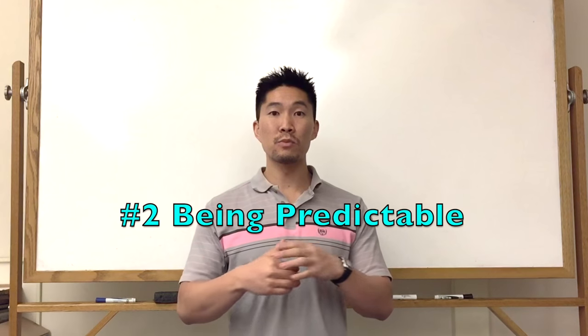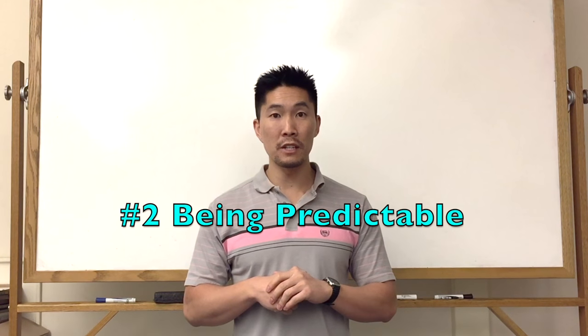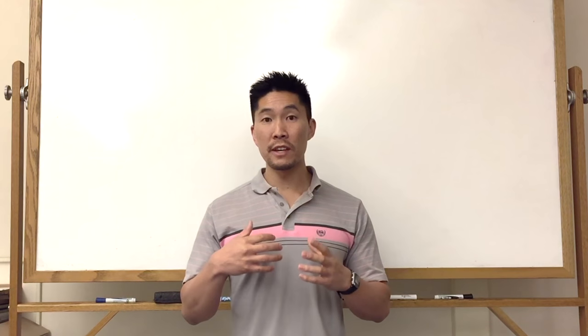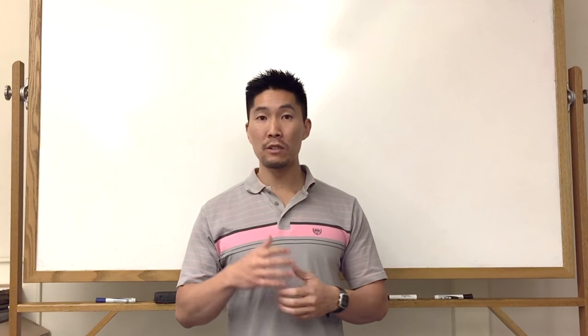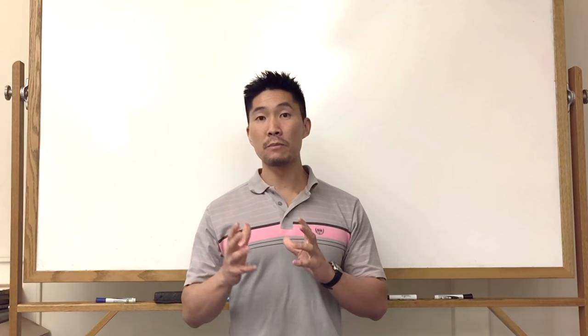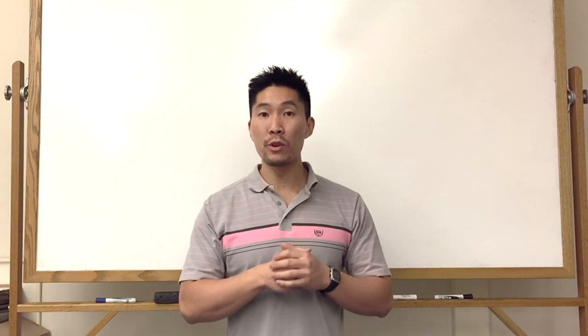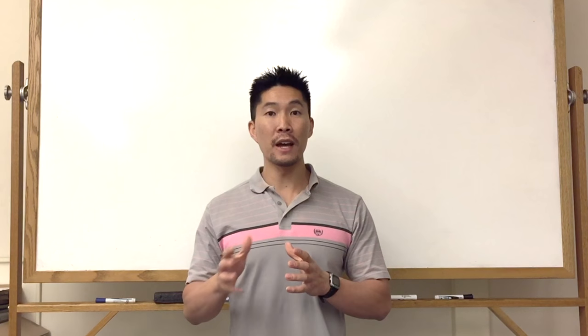The second mistake is that setters will dump the ball only when they jump set or only when the pass is tight. Your goal as a setter is to be deceptive, so either jump set majority of the time or try to set the ball when the pass is very tight so that the other team won't always know what you're doing even when the pass is tight to the net.